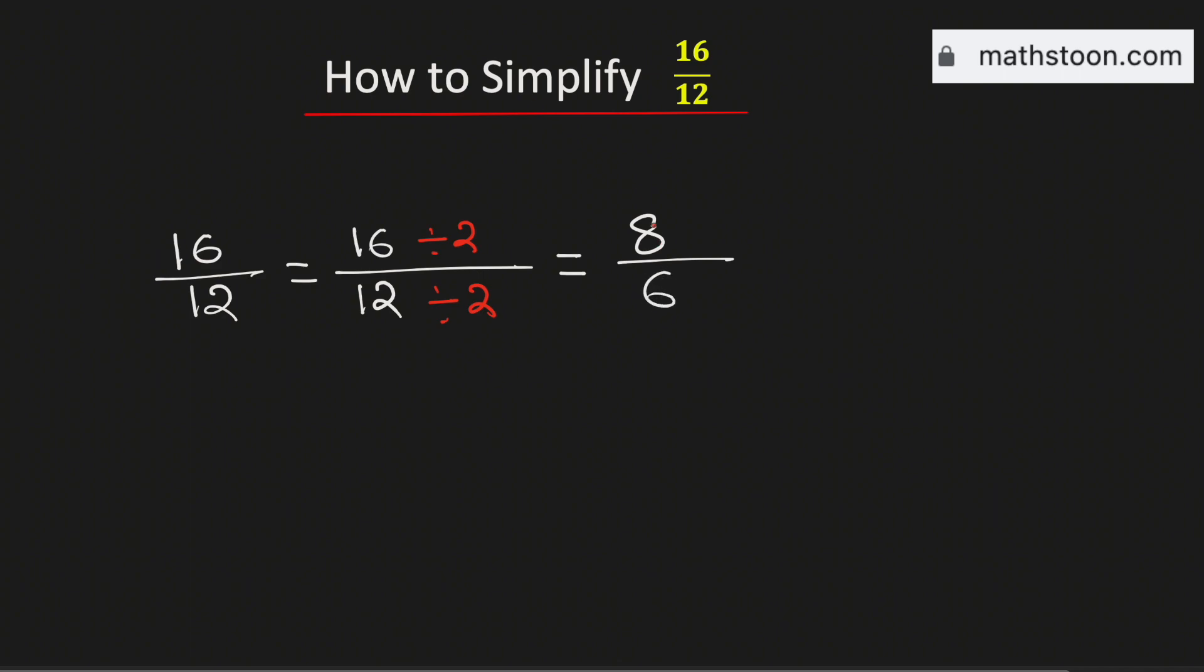Now again see that both are divisible by 2, therefore to simplify this fraction further we will divide both 8 and 6 by 2 and this will give us 4 over 3.